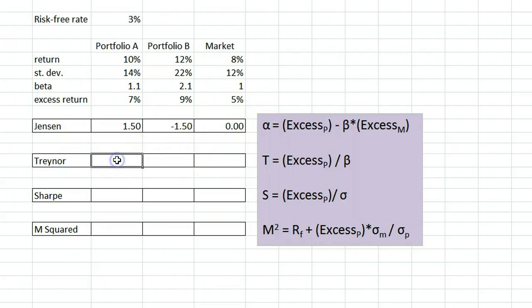The Treynor measure gives a risk-adjusted return using beta as the measure of risk. To calculate Treynor, we just divide the excess return by beta. For portfolio A, that is 7 divided by 1.1.